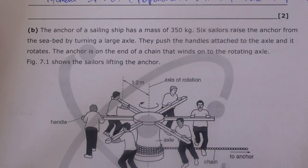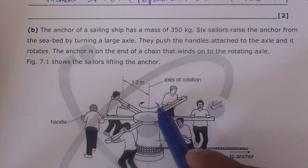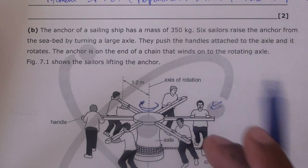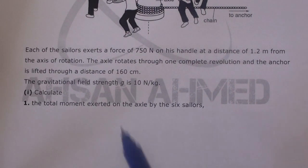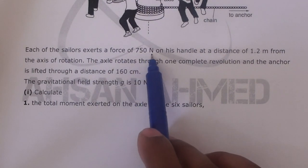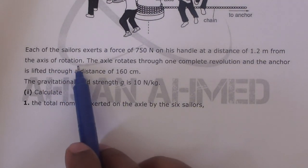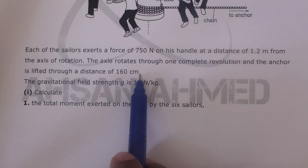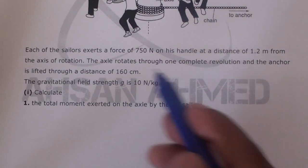Figure 7.1 shows the sailors lifting the anchor. They are rotating it in this direction, the chain winds up, and eventually the anchor comes up — that's how early sailors used to do it before mechanical engines. Each of the sailors exerts a force of 750 newtons on his handle at a distance of 1.2 meters from the axis of rotation. The axle rotates through one complete revolution and the anchor is lifted through 160 centimeters. Gravitational field strength g is 10 N/kg.